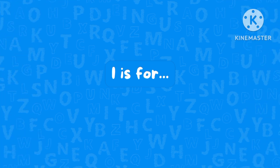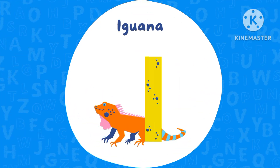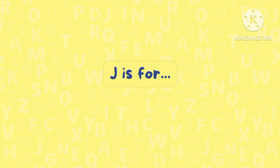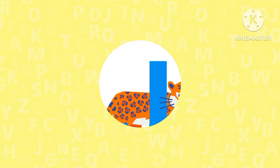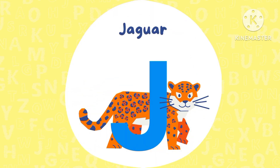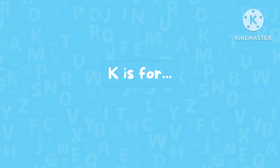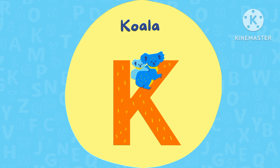I is for Iguana. J is for Jaguar. K is for Koala.